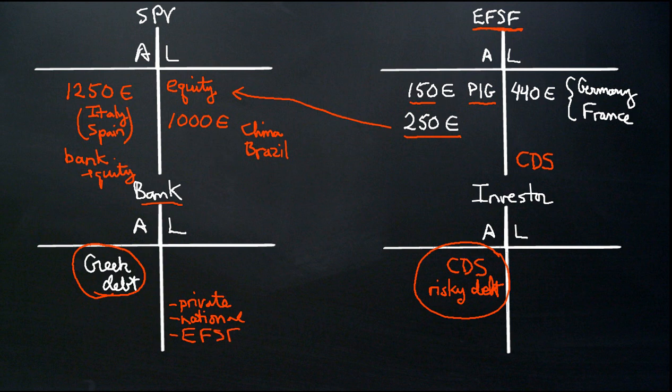Now notice two things. One, this whole thing is based on leveraging the credit of the EFSF, which ultimately comes from Germany and France. Much of the commentary has pointed this out, and this is probably the problem. But I want to point out something else.